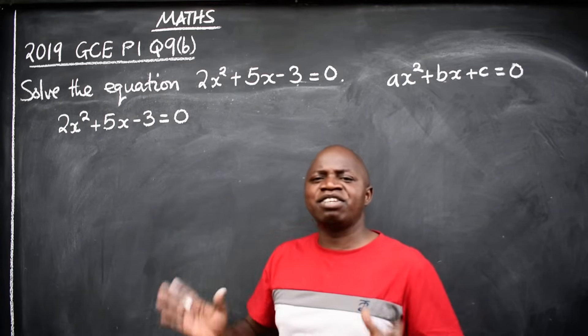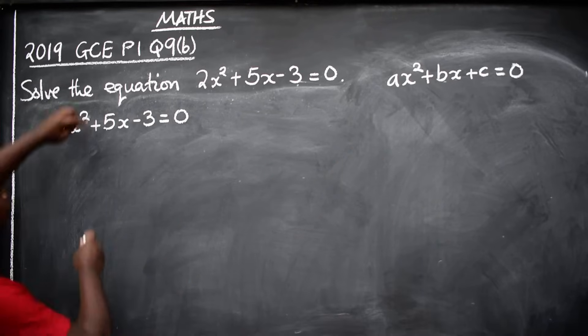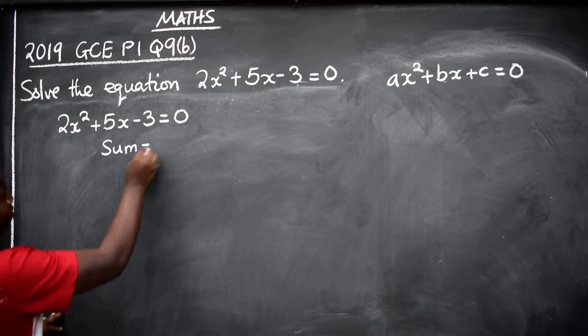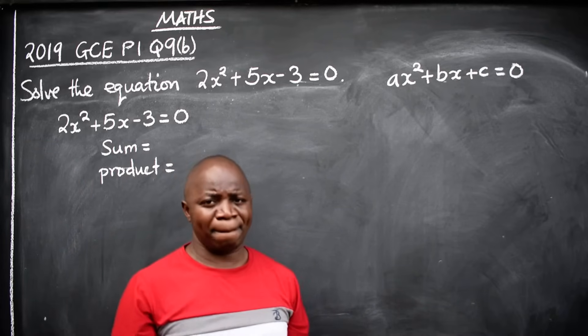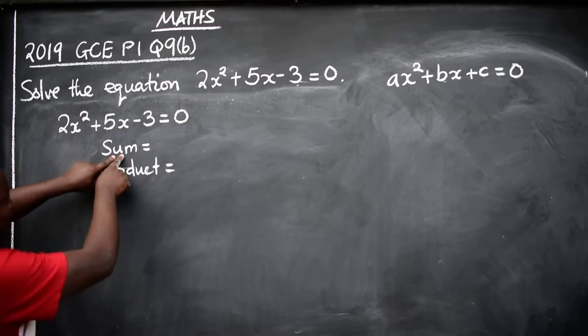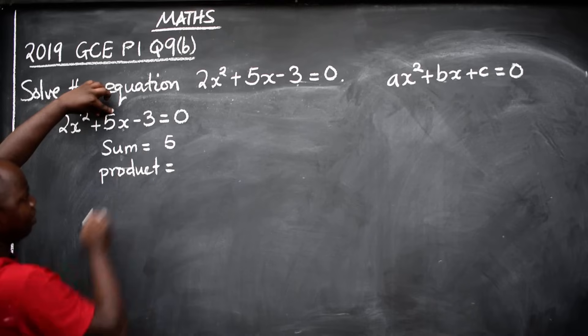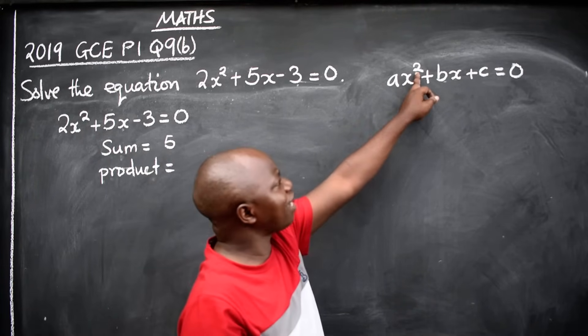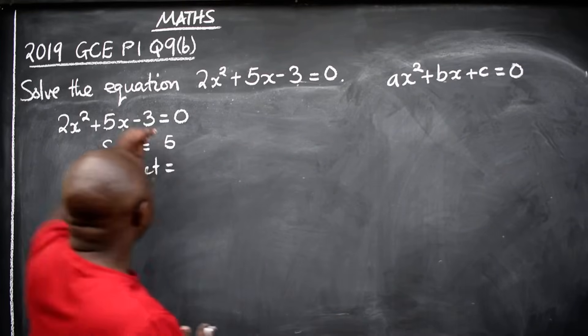How do you identify that the equation can be factorized? Well, for the equation to be factorized, it should have the sum and the product. What is the sum? The sum is the coefficient of x, which is 5. What is the product? You multiply the coefficient of x² and the constant. So we have 2 × -3, which gives us -6.